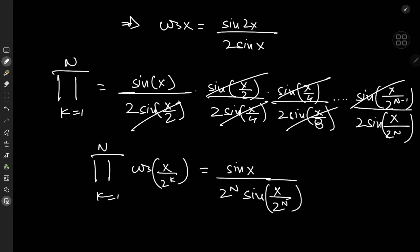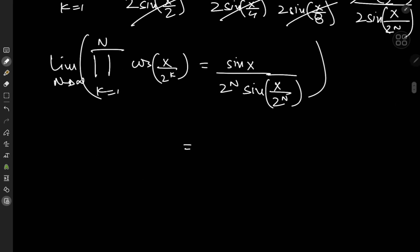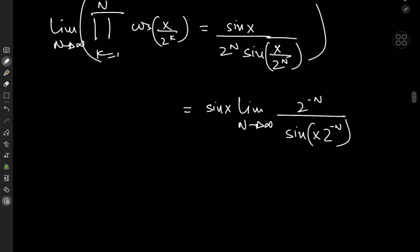And I'm interested in the limit of this thing as n tends to infinity. So let me just apply the limit now as n tends to infinity. The sine term is independent of the index variable n, so I have sine x times the limit, as n tends to infinity, of 2 to the negative n divided by sine of x times 2 to the negative n. Now as n tends to infinity, 2 to the negative n goes to 0, and in the denominator we have sine of 0, which is 0. So I have a 0 by 0 form, and I'll apply L'Hopital's rule.